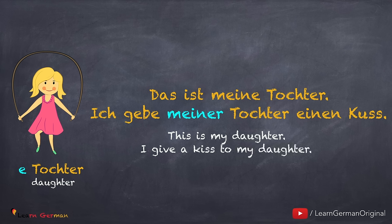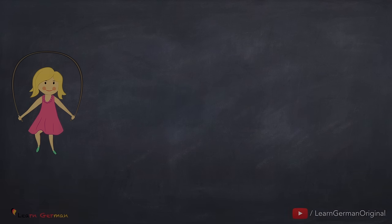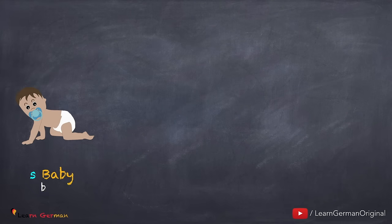Das ist meine Tochter. Ich gebe meiner Tochter einen Kuss. In this case, the article of the indirect object is 'die' — the daughter — and this changes to 'meiner Tochter' because it's dative.